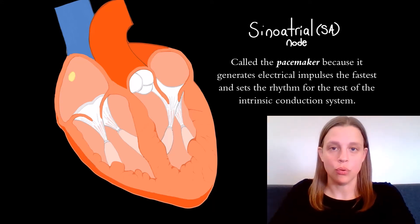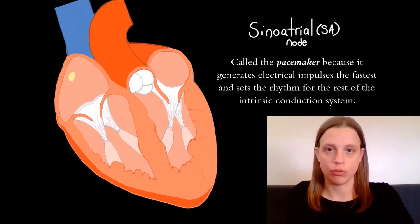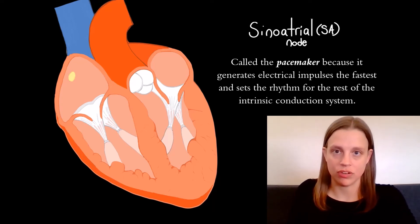the SA node is going to set the rhythm and control the speed at which electrical impulses are traveling through the rest of the intrinsic conduction system.